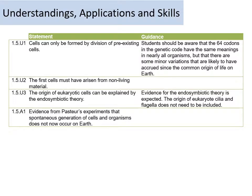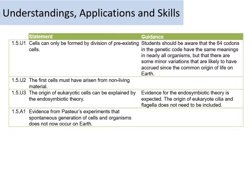We'll be going over all of the 1.5 learning objectives in this single set of notes. It will be a little bit longer than some notes we've had. We'll be talking about how we know that cells have to be dividing from pre-existing cells, some of the evidence for where pre-existing cells must have formed over time, and important experiments like Pasteur's experiment, as well as how the formation of early molecules probably occurred.